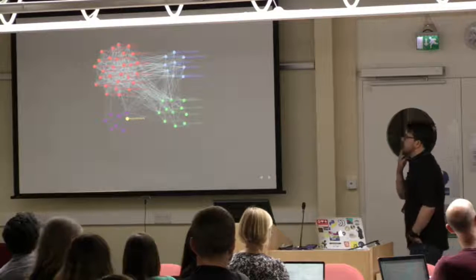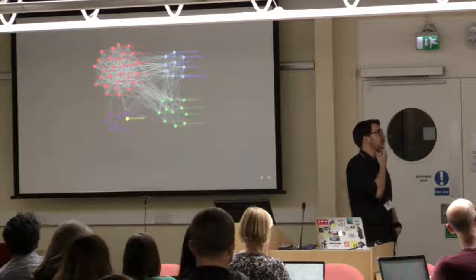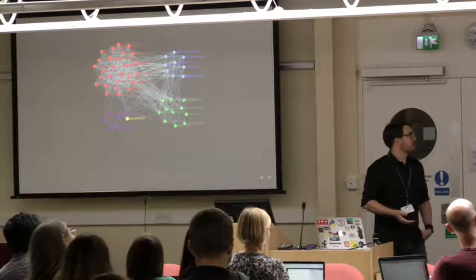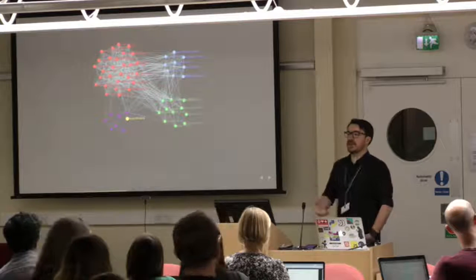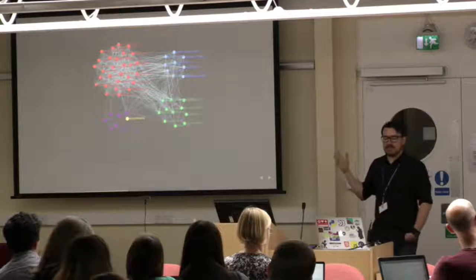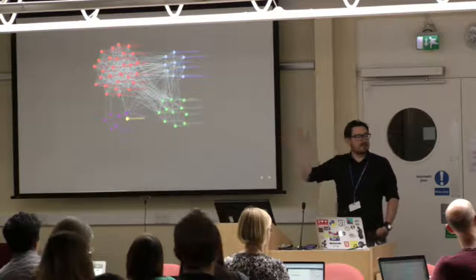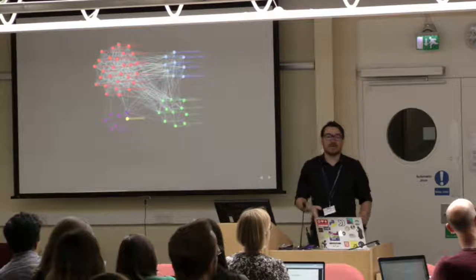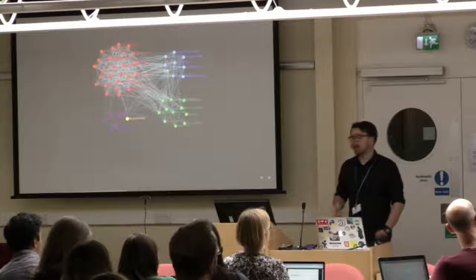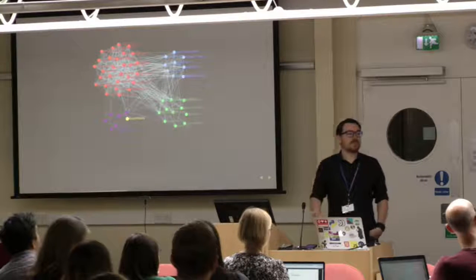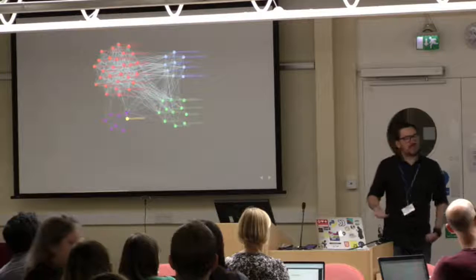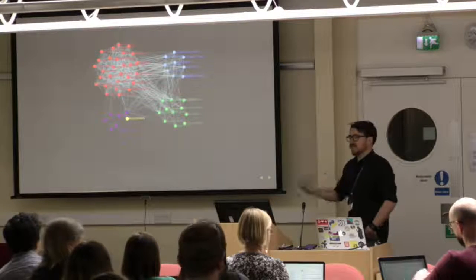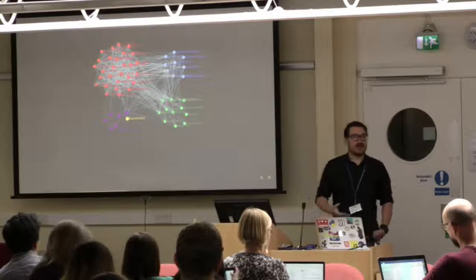One of the other interesting things is that we can use a completely different layout and get a completely different story. This is exactly the same data, the same network, but with a different layout. All I've done here is told D3 to make sure that party is important when placing the nodes — so it places all the Labour members together. Here we see a lot of cross-party connections, and it's certainly easier to see cross-party connections than in the previous visualisation. We still see that UKIP is on their own, not connected to other people — that could just be because they haven't made friends yet.